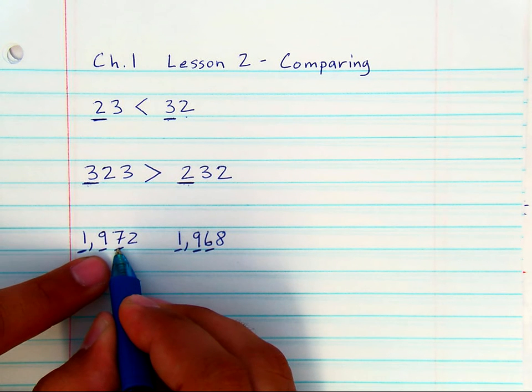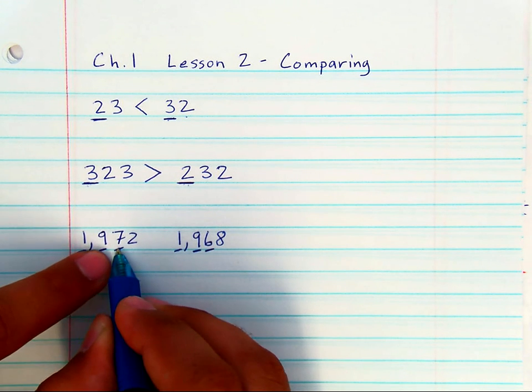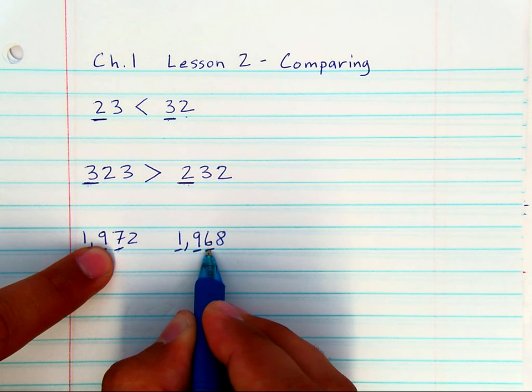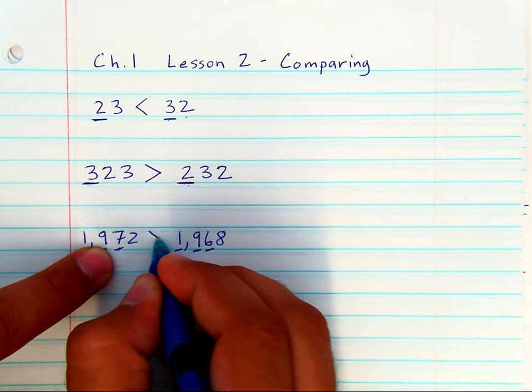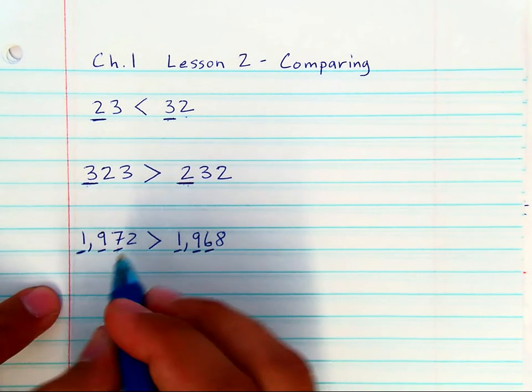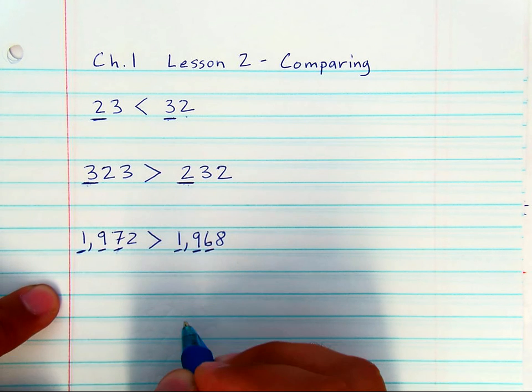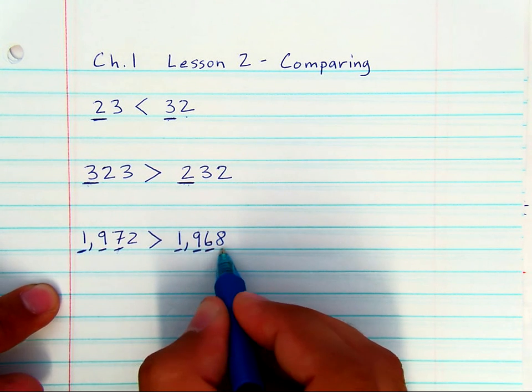And you can see that this digit is larger. This digit in the tens place is larger than this digit in the tens place. So, the entire number is affected. So, 1,972 is larger than 1,968.